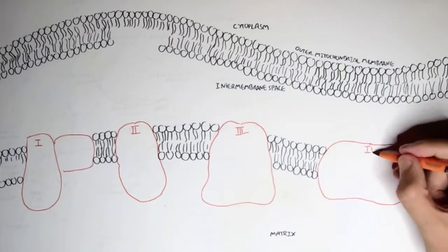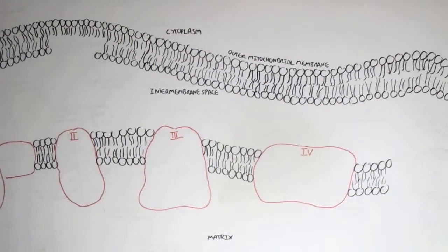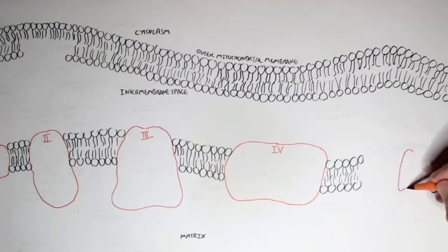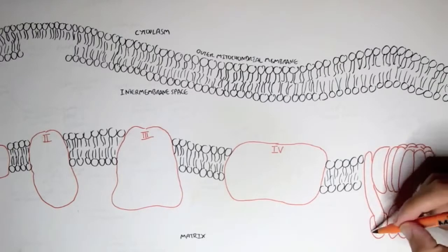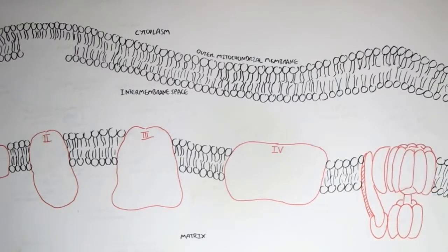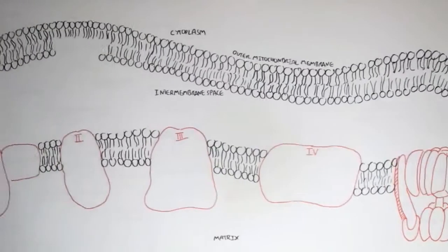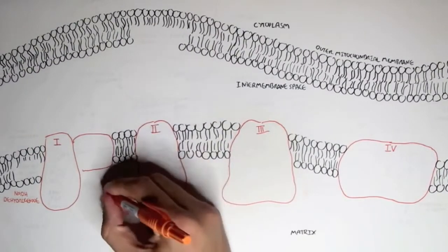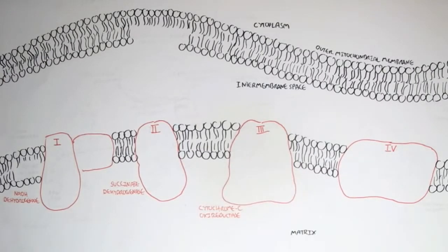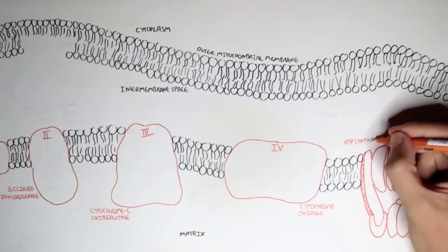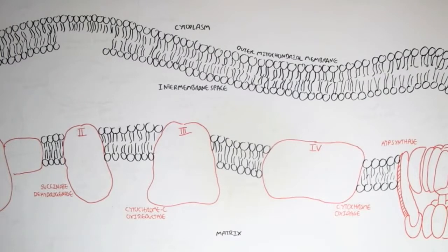Also in the oxidative phosphorylation process, we cannot miss the one important enzyme which creates ATP, known as ATP synthase. ATP synthase is sometimes known as complex 5. The four complexes each have names: complex 1 is known as NADH dehydrogenase, complex 2 is succinate dehydrogenase, complex 3 is cytochrome C oxyreductase, complex 4 is cytochrome oxidase, and complex 5 is known mainly as ATP synthase.